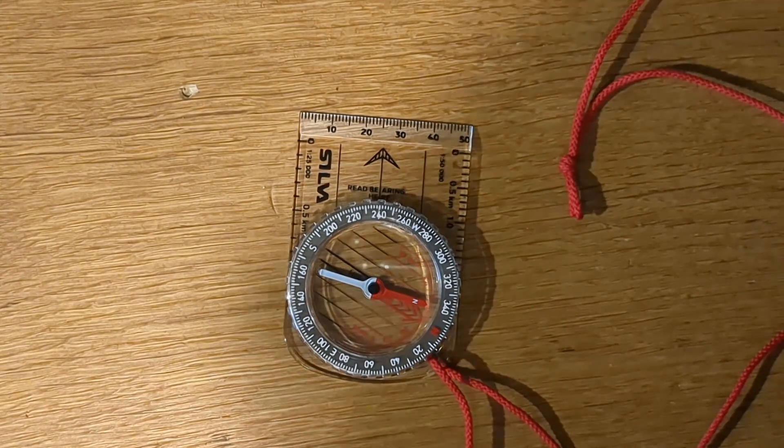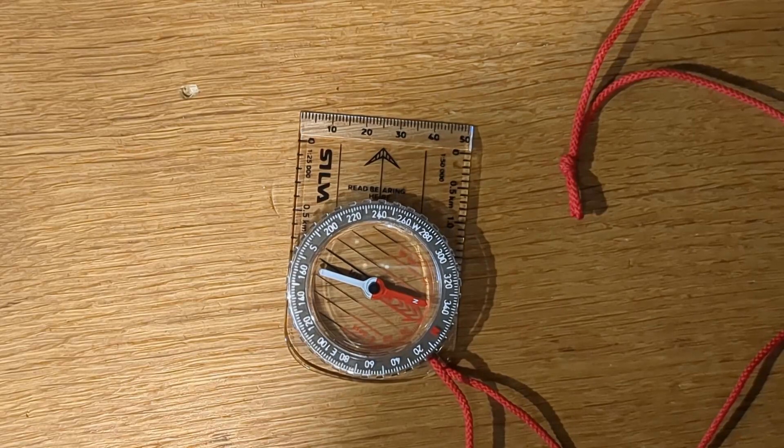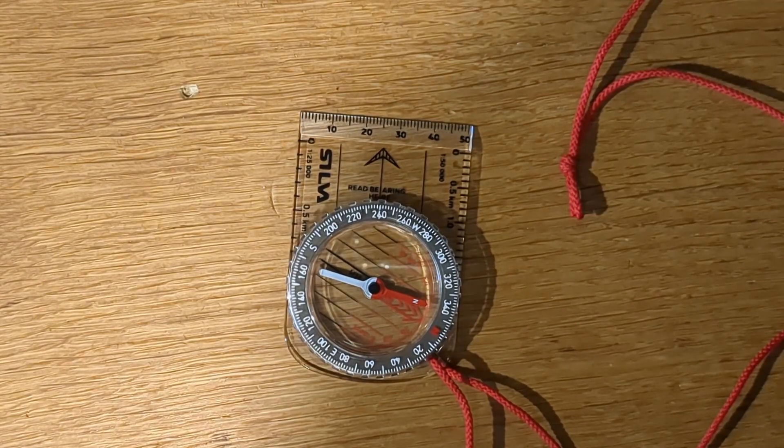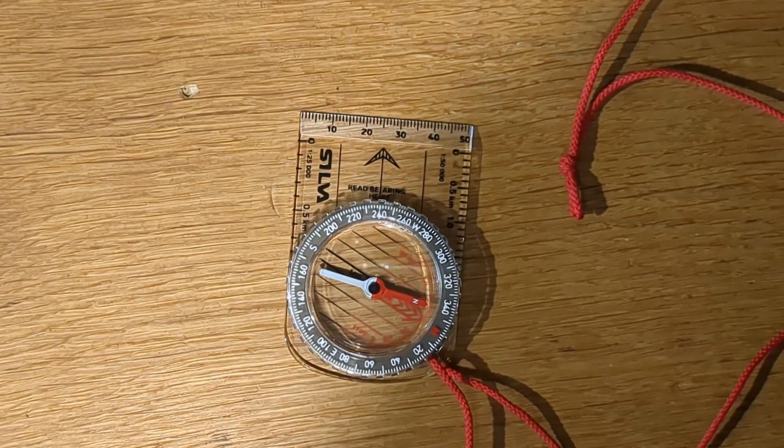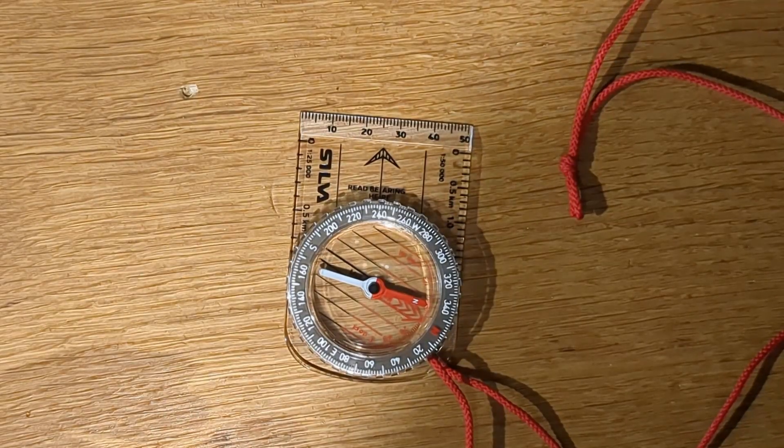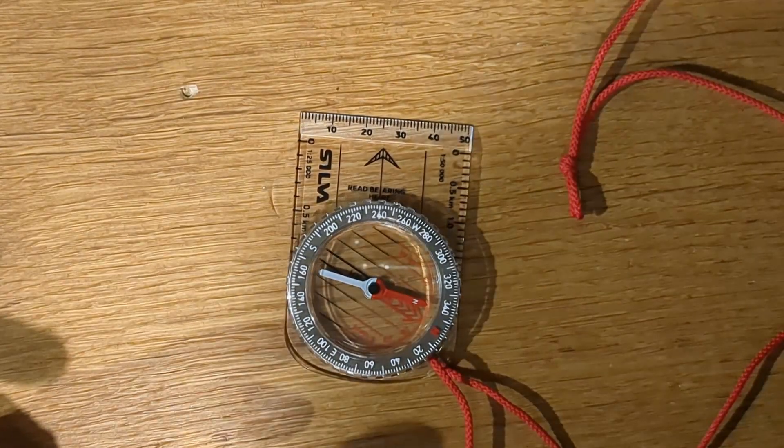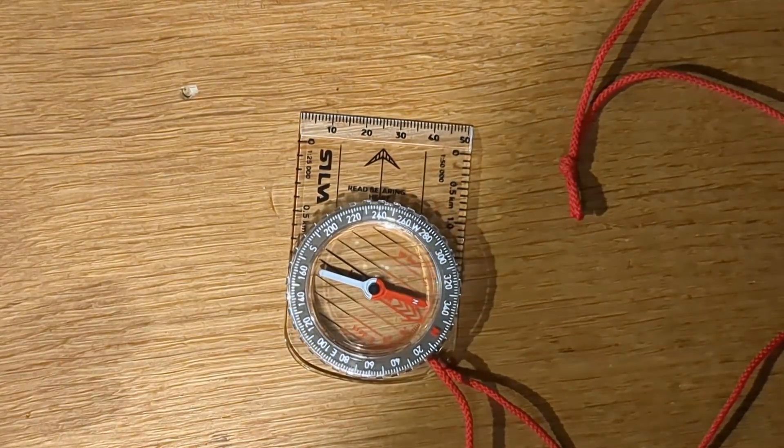This is a quick video about why you need to be careful with metal and magnetic objects close to your compass. The compass points towards north by aligning itself to the lines in the Earth's magnetic field, which of course are invisible and you can't see.